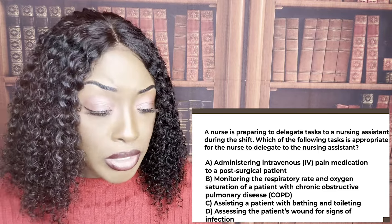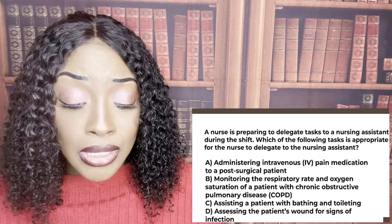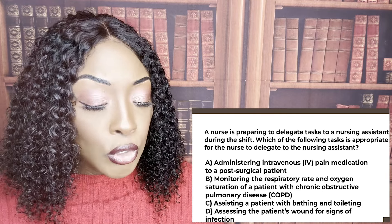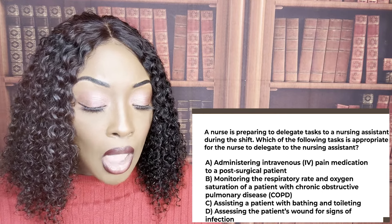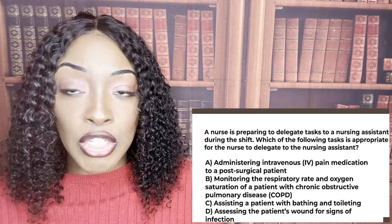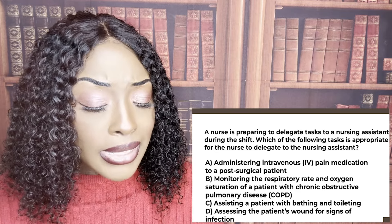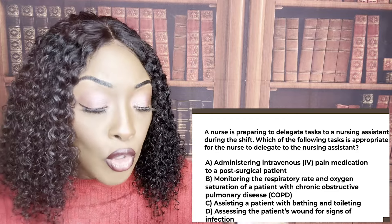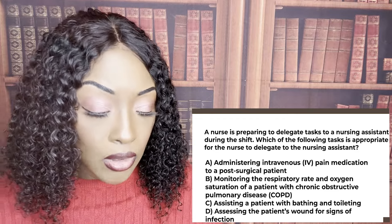Now the wrong answer choices: A — administering IV pain medication requires a license. B — monitoring respiratory rate and O2 sat of a COPD patient requires assessment; you need to know if the patient is getting better or worse. That's skilled nursing. D — assessing the patient's wound is skilled nursing. All three — A, B, and D — require critical thinking.